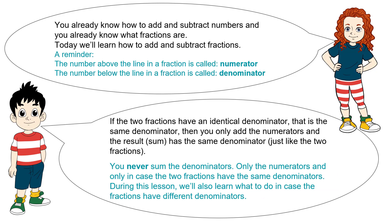If the two fractions have an identical denominator — that is, the same denominator — then you only add the numerators, and the result, the sum, has the same denominator just like the two fractions. Never sum the denominators, only the numerators, and only in case the two fractions have the same denominators. During this lesson we'll also learn what to do in case the fractions have different denominators. Just patience and everything will be clear.